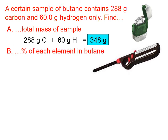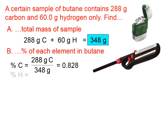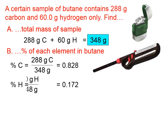If we want to find the percent of each element in butane, by definition a percentage is the part divided by the whole. The part that is carbon is 288 grams and the whole has a mass of 348 grams. For hydrogen, we could write the decimal as 0.172, because the sum of these two must add up to 1 — that is, the percentages must add up to 100%, since those are the only two elements in this compound.